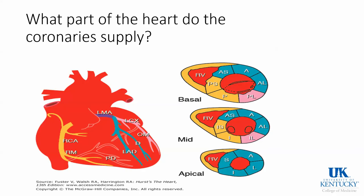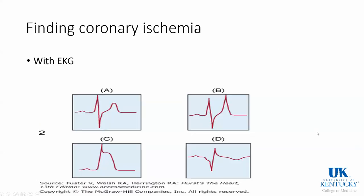Which part of the heart do these arteries supply? In transthoracic imaging, the Doppler beam hits the anterior part of the heart first. The anterior and septal walls are supplied by your LAD, your RV as well as the inferior wall is supplied by the RCA, and the left circumflex supplies the lateral portion of the heart.